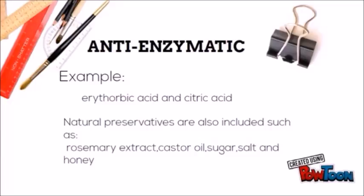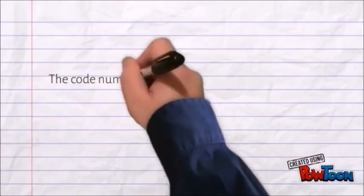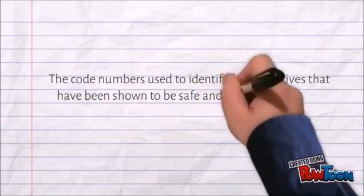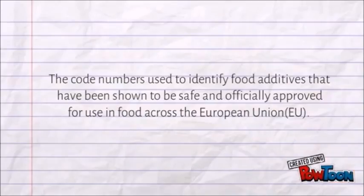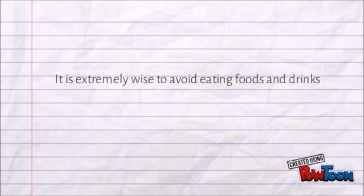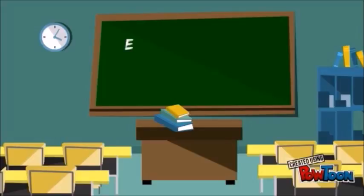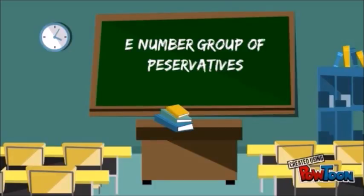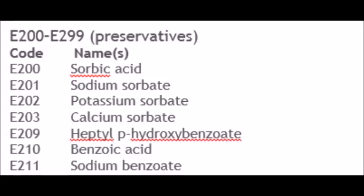Natural preservatives such as rosemary extracts are also included among those that have been shown to be safe and officially approved for use in food across the European Union. It is wise to avoid eating foods and drinks with harmful food additives, identified by their E-numbers. Not all E-numbers are bad for you. This is a picture of the E-number group of preservatives from E200 to E300.